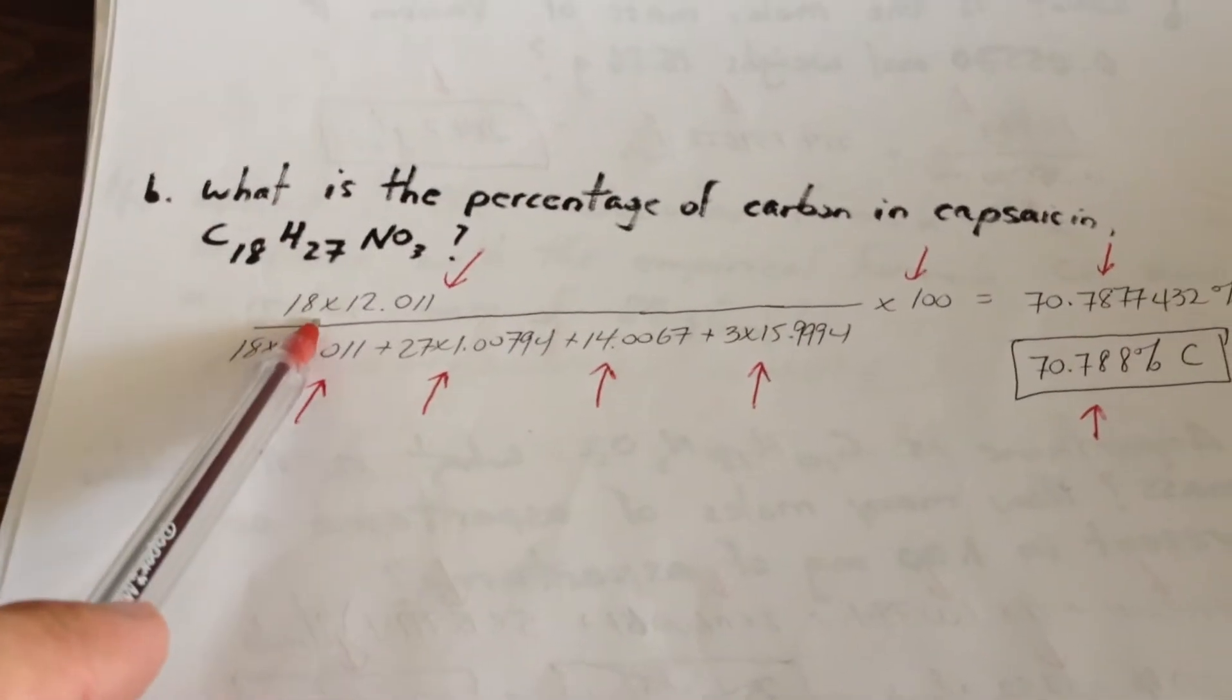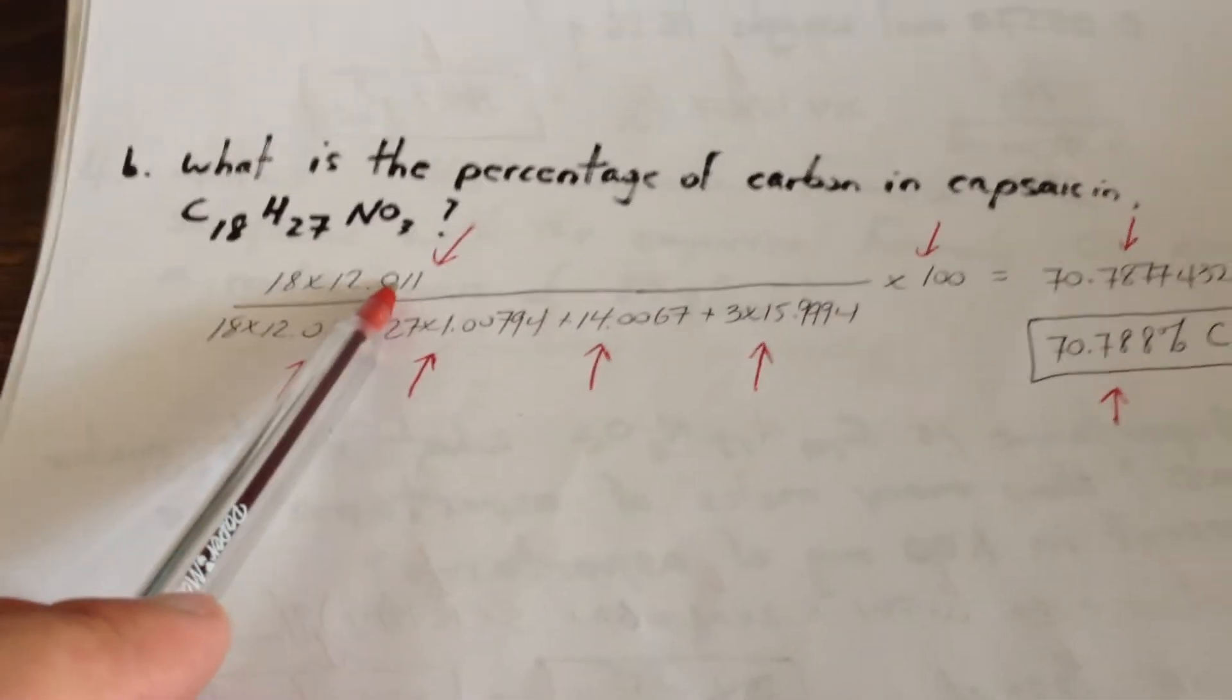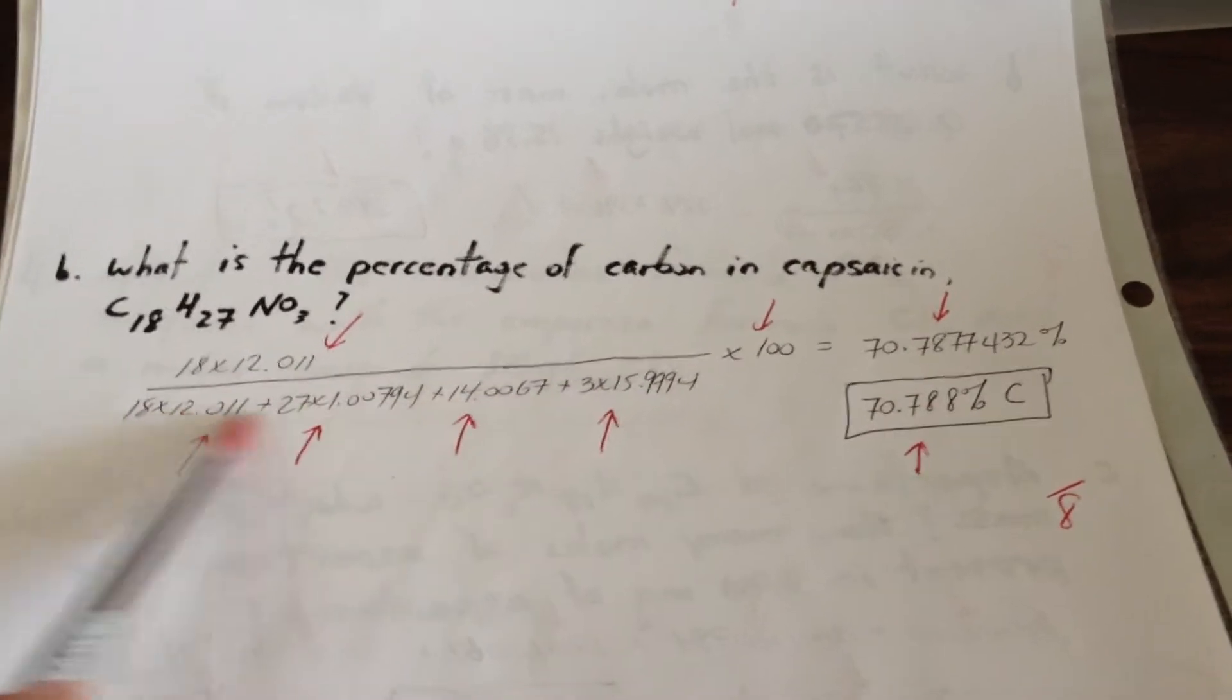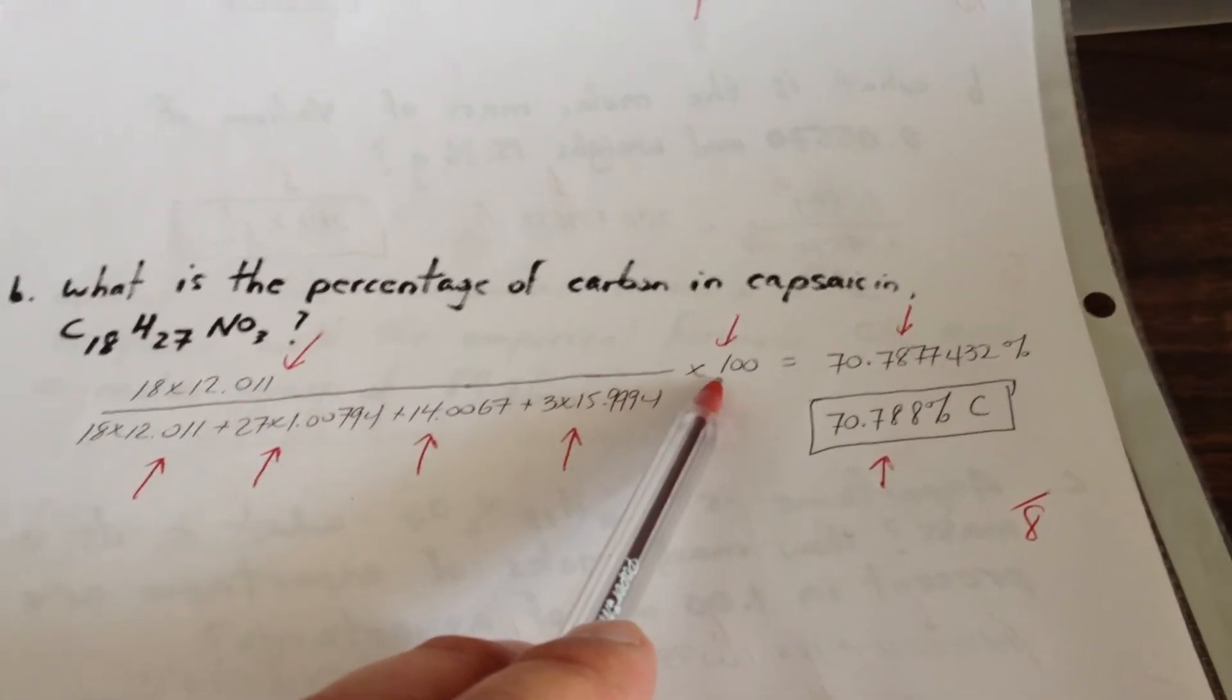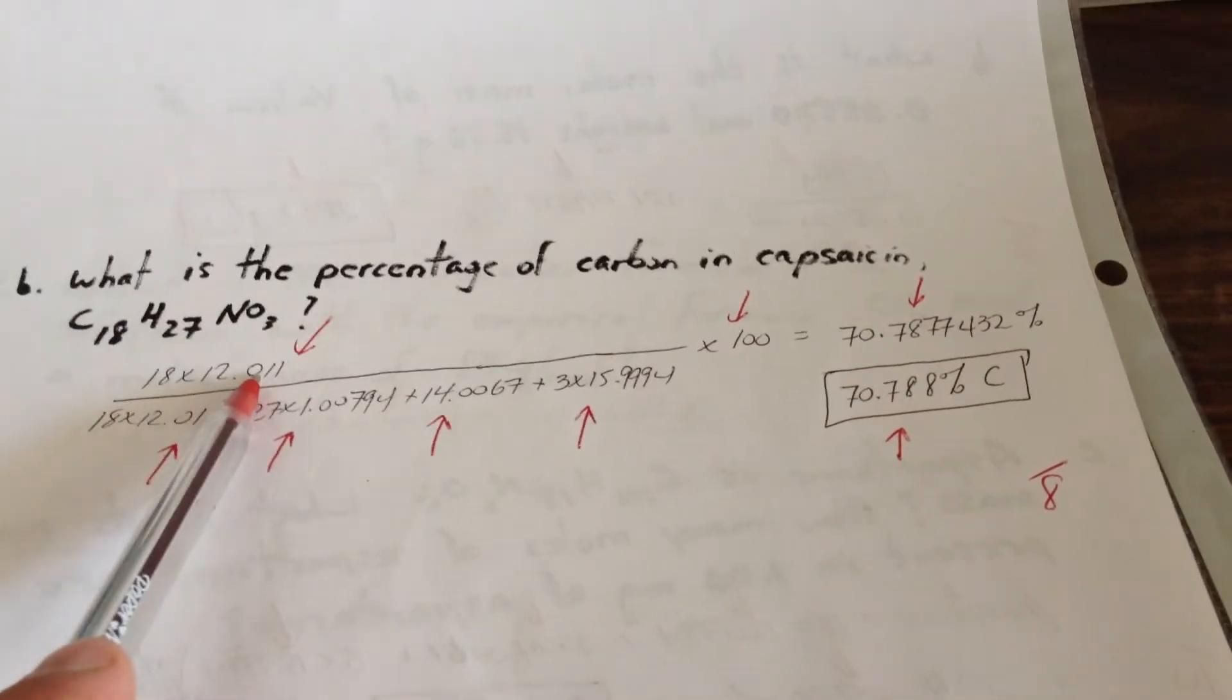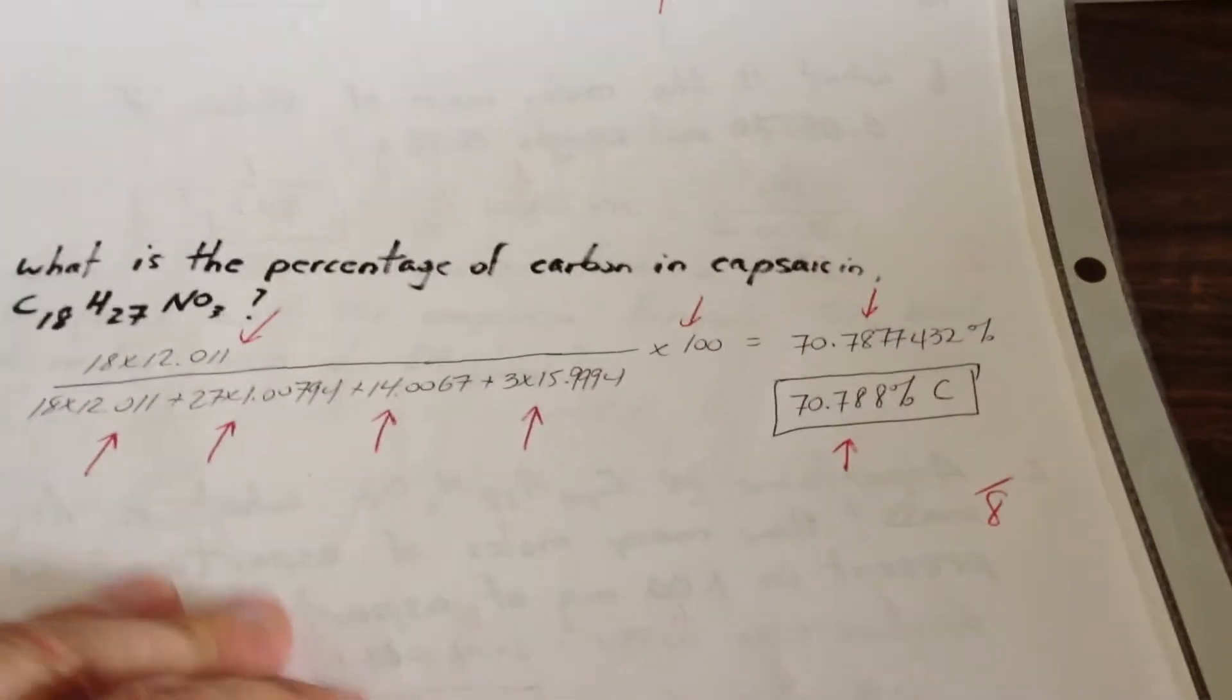So here is the molar mass due to carbon in capsaicin, which is the active principle of pepper. Here's the molar mass of the whole molecule. And we multiply by 100 to turn into a percentage. Again, we're only allowed five significant figures because carbon is limiting with only five sig figs in its answer. That question was worth eight.